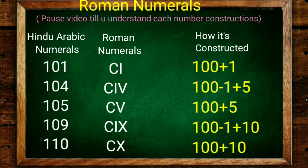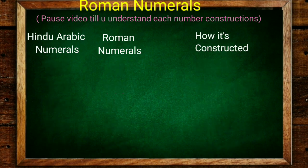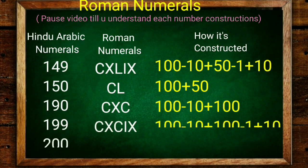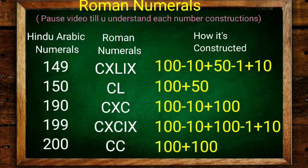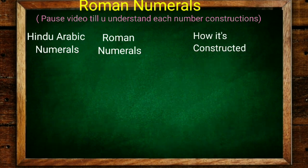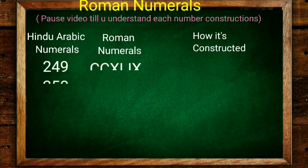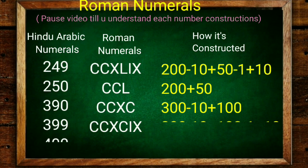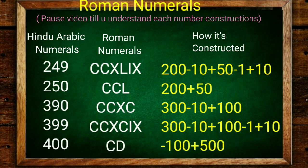So now we have learned up to 110. Now we'll go beyond 110. I'll do it fast. 149 is 100 plus 40 plus 9. 150, 190, 199. And 200. 199 is 100 plus 90 plus 9. Here we got a special numeral, that is D, which is 500.